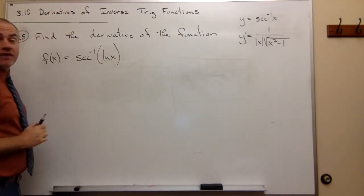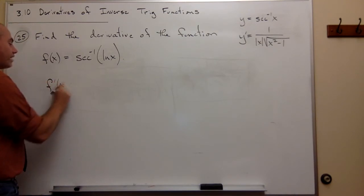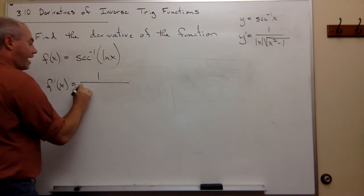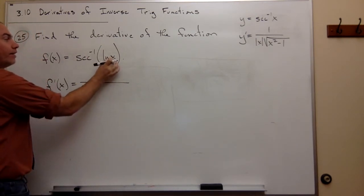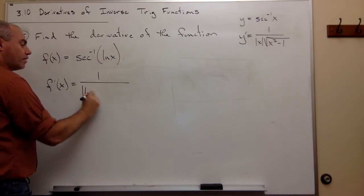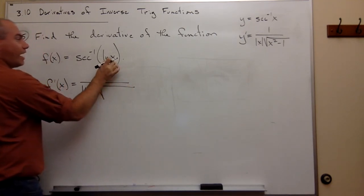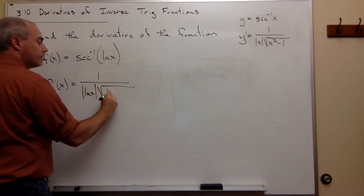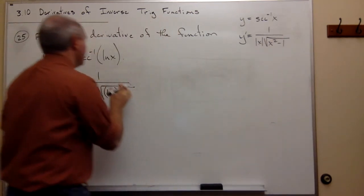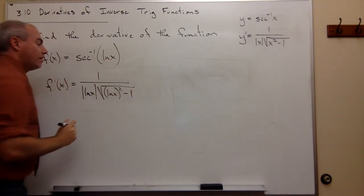So if I want to find f'(x), it's going to be 1 over the absolute value of ln(x), times the square root of ln(x) squared minus 1. I've substituted ln(x) everywhere I had an x in the formula.